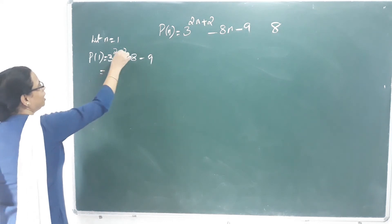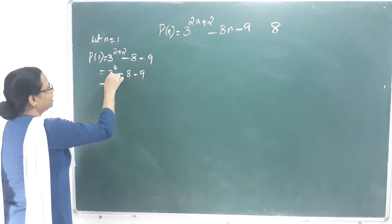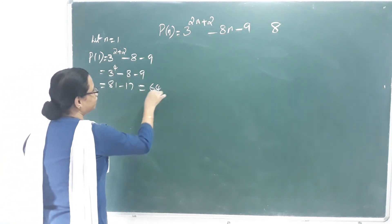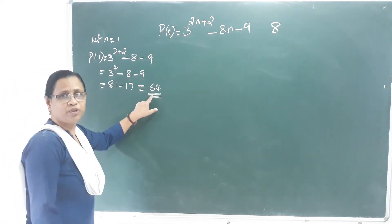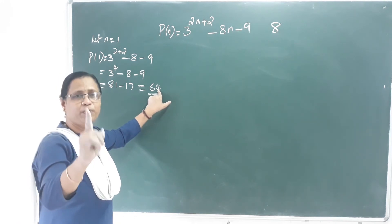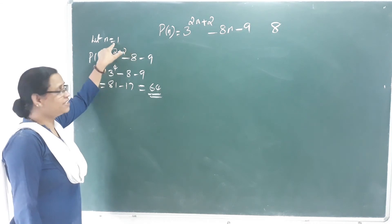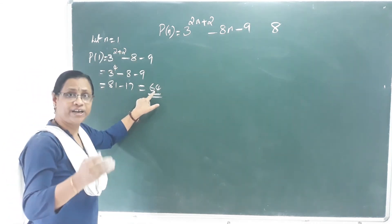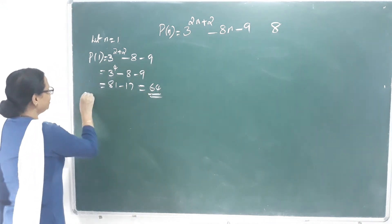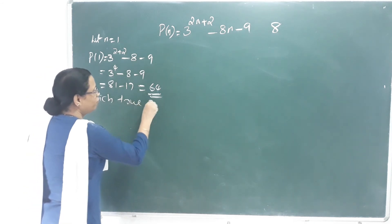That gives 3 raised to 4 minus 8 minus 9, which is 81 minus 17, equal to 64. So P of 1 equals 64, which is true — P of 1 is true.